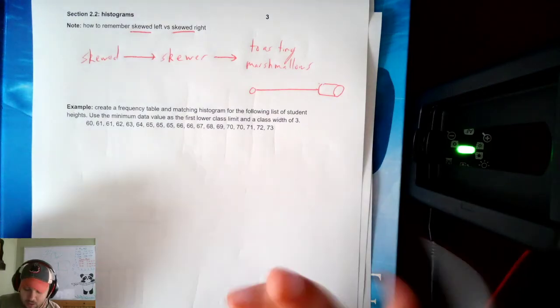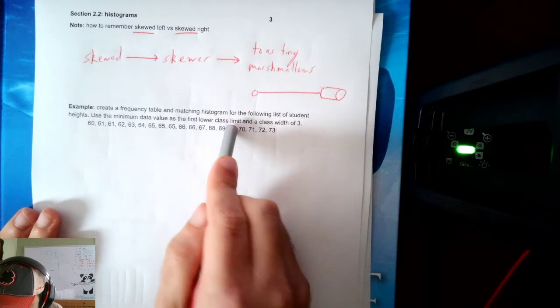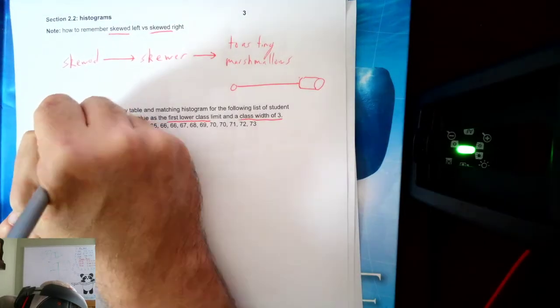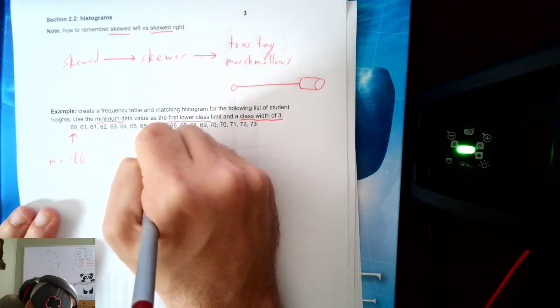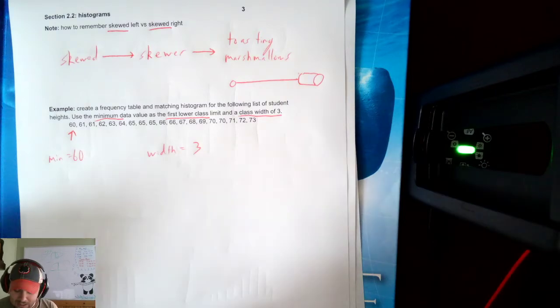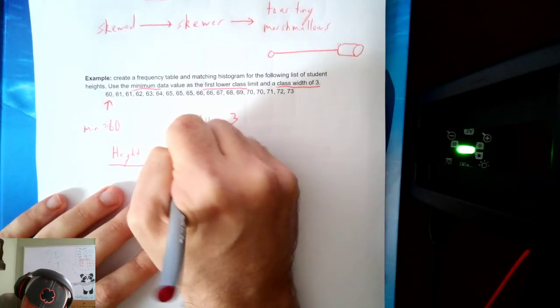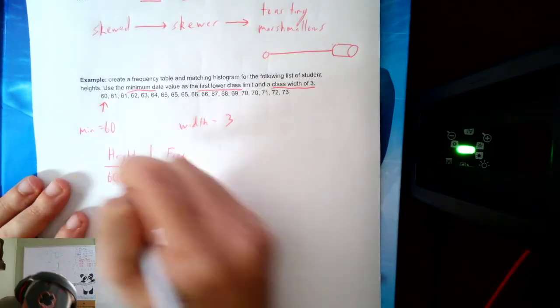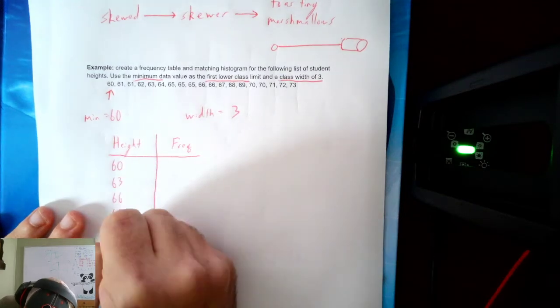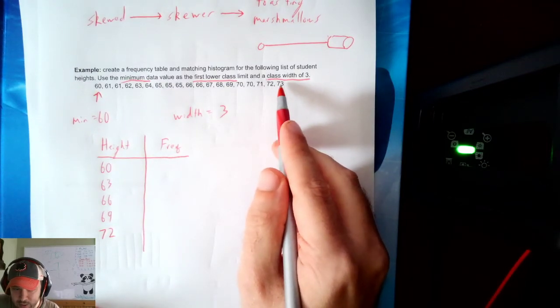Now, let's take one last example. Create a frequency table and matching histogram for the following list of student heights. Use the minimum data value as the first lower limit and a class width of 3. Class width of 3, first lower limit is minimum. So let's see. It looks like the data is in order. So that's my minimum. So the minimum is 60. And the question told me the width was 3. I don't need a calculator. The question just gave me the width. I don't need to use the formula to calculate it.